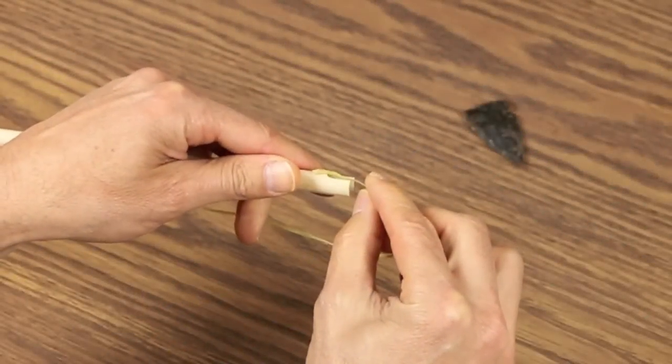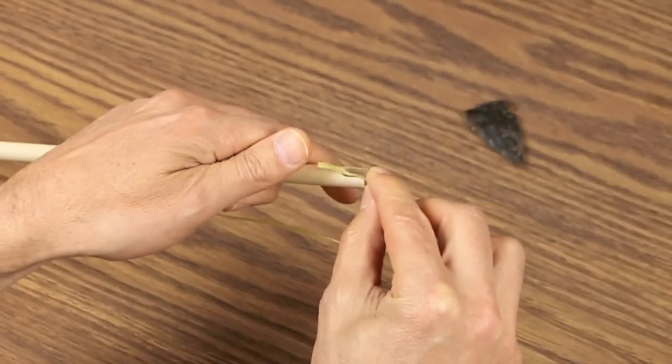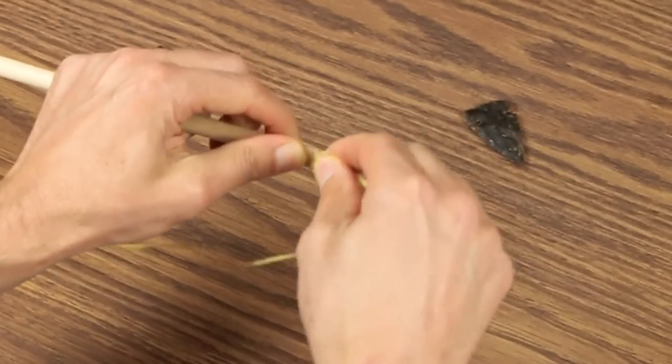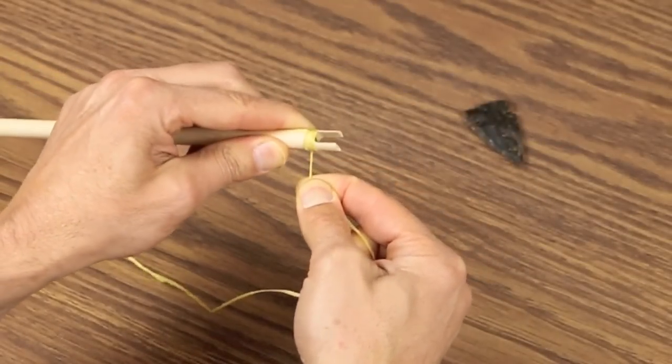Lay the beginning piece of the sinew through the notch, hold it with your thumb, and just wrap around two times to secure that beginning, just like that.